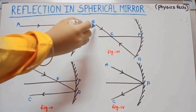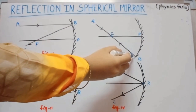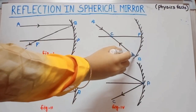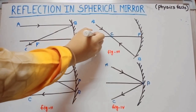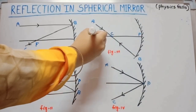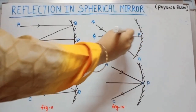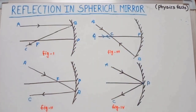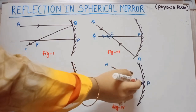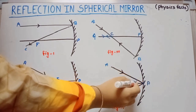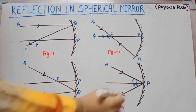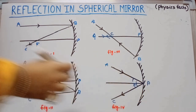Third rule: if any incident ray passes through the center of curvature, no deviation occurs and that ray retraces its own path. Fourth rule: if any incident ray passes through the pole, it obeys the laws of reflection — the angle of incidence equals the angle of reflection, and the ray PC is the reflected ray obeying those laws.